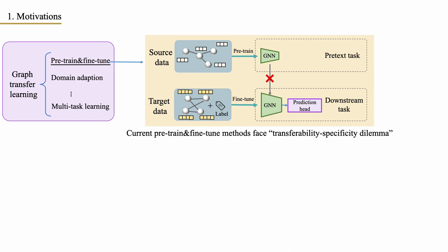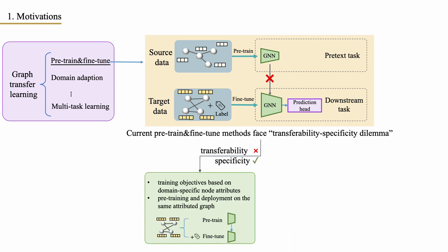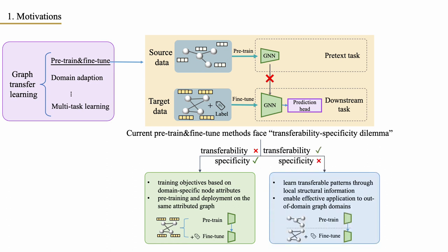In this work, we aim to address the transferability-specificity dilemma in graph domain transfer learning. Current pre-training methods fall into two groups: the first group constructs training objectives based on domain-specific attributes, emphasizing pre-training and deployment on attributed graphs from the same domain, achieving specificity but losing transferability. The second group focuses on learning transferable patterns through local structural information, enabling effective application to out-of-domain graph domains, but disregards node attributes during pre-training to avoid mismatches, failing to effectively utilize valuable downstream node attributes. These methods achieve transferability but lose specificity.